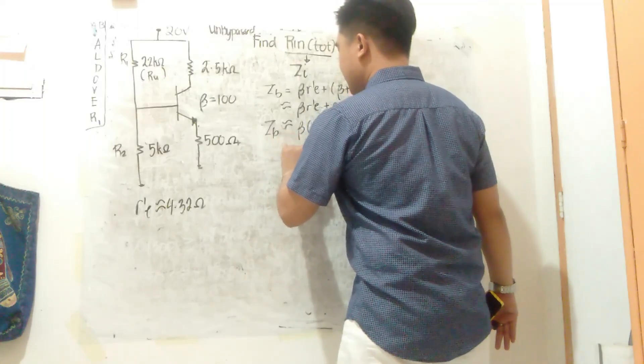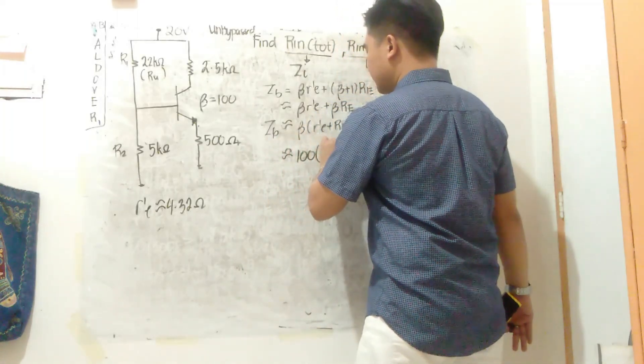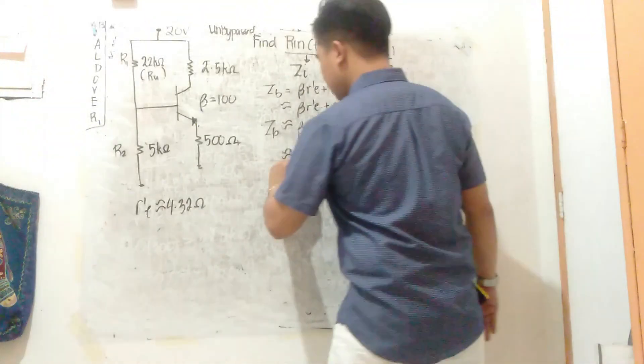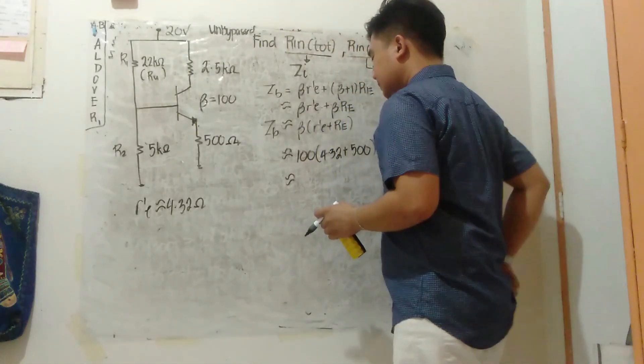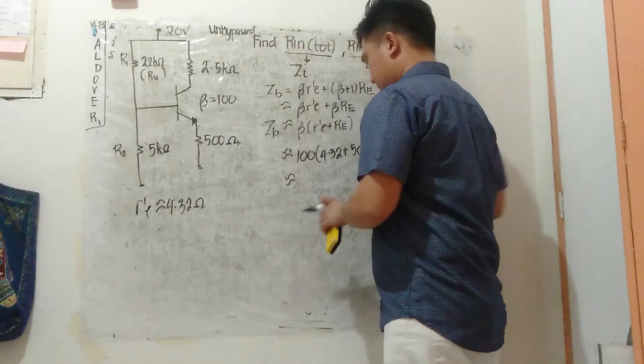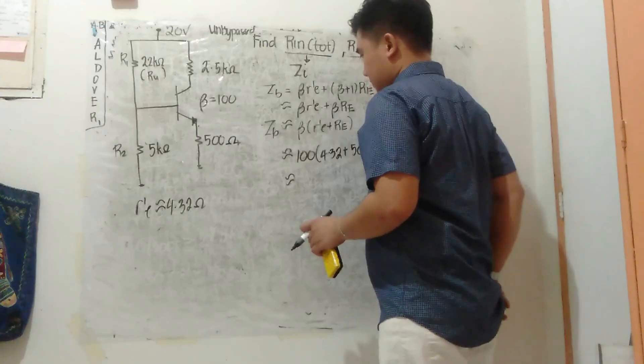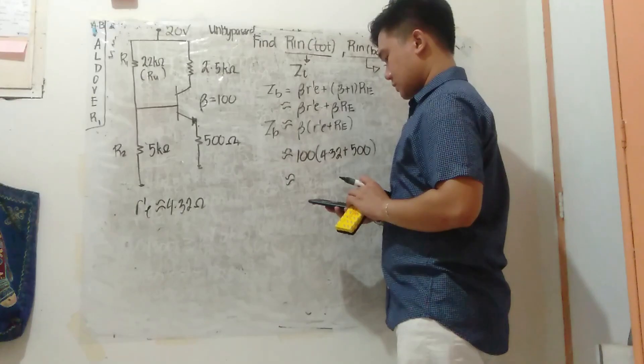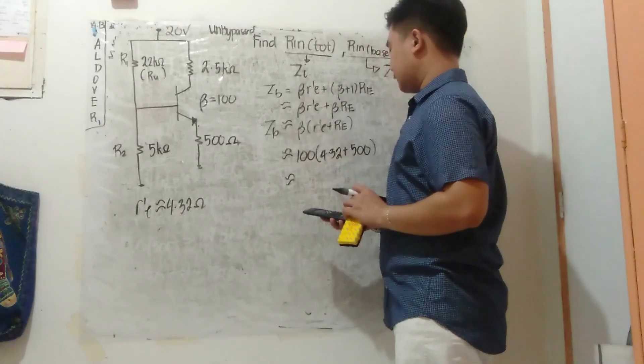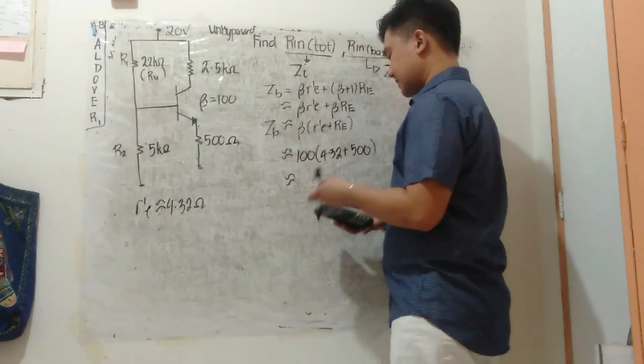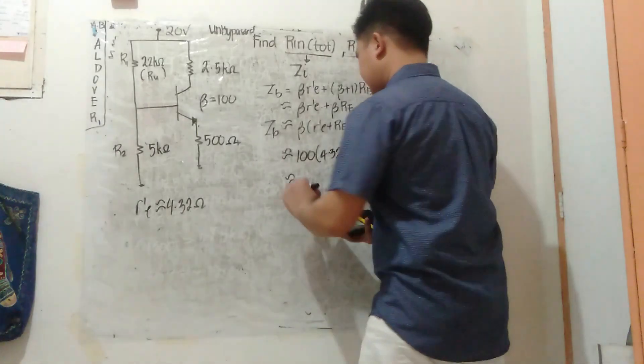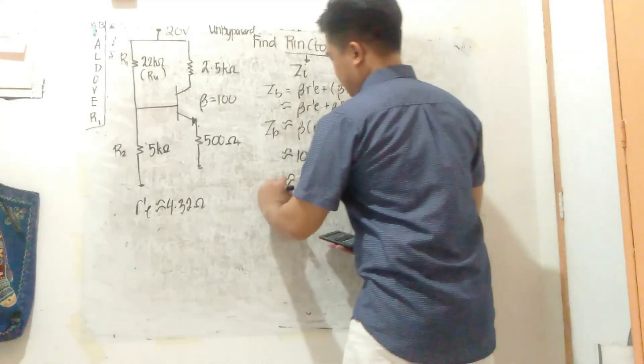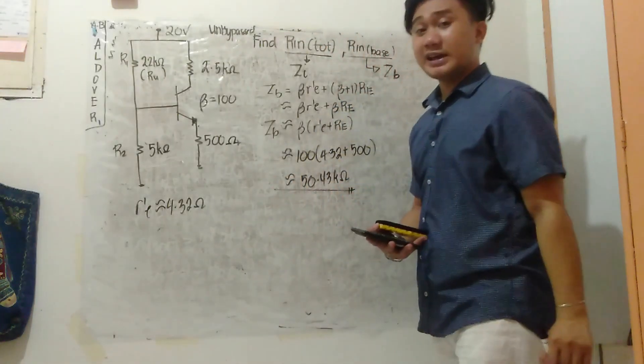Earlier we computed that R prime E is approximately 4.32 ohms from the previous problem. So this is approximately equal to 100 times (4.32 plus 500), which equals 50.43 kilo ohms or approximately 50 kilo ohms.